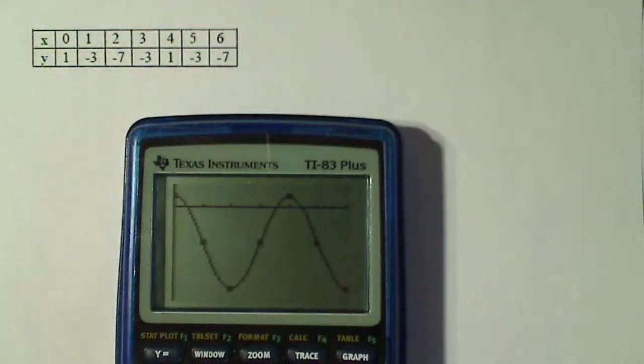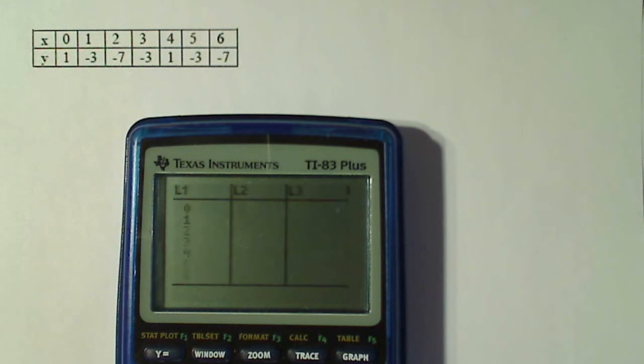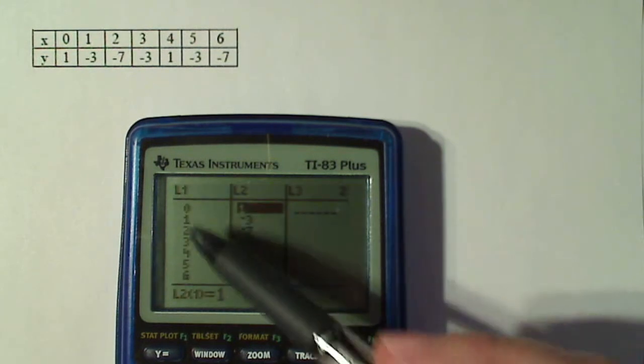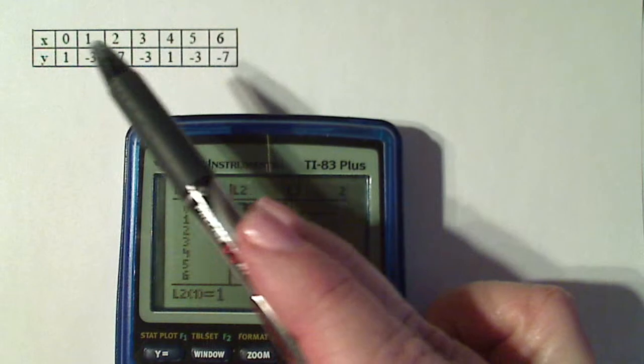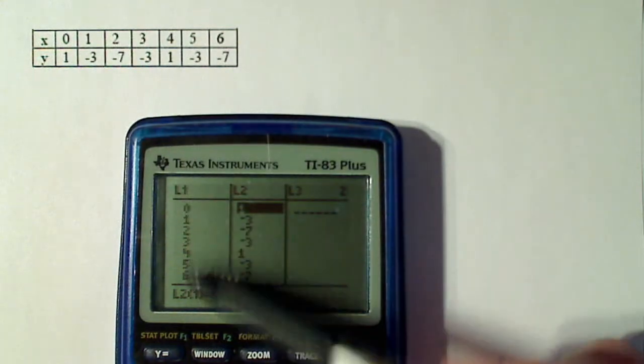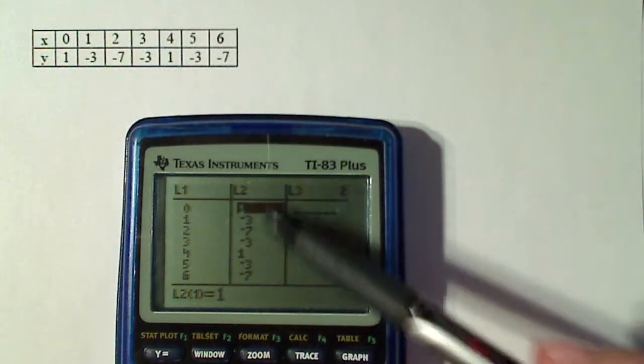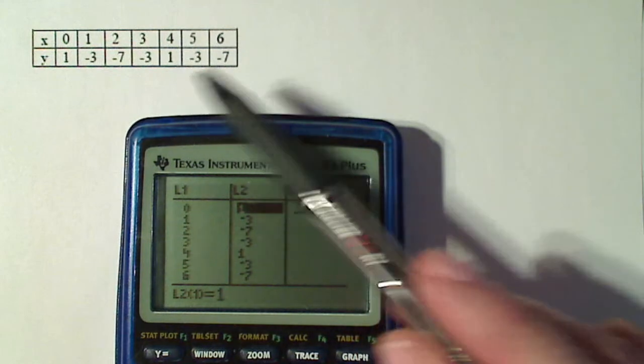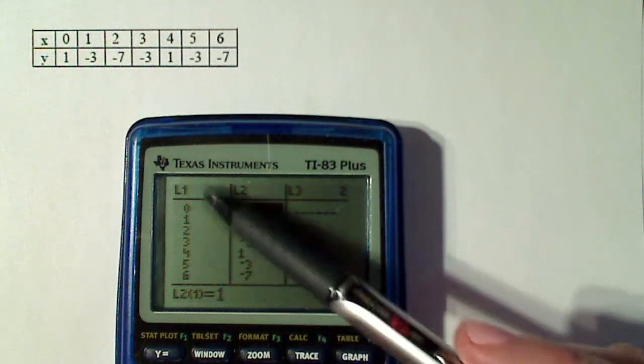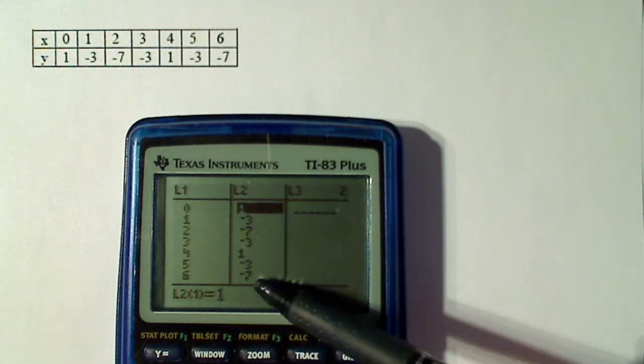So to do this, I go to my calculator and I go to my stat and hit edit. And in my first column, I'm going to put the numbers one through six. And in the second column, I'm going to put the numbers one, minus three, minus seven, in other words, the second row. So this is going to be my X list and my Y list.